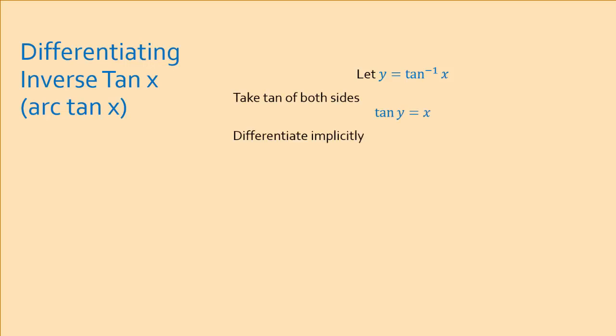From here we can differentiate implicitly. The derivative of tan is sec², so when we differentiate tan y we get sec²y times dy/dx, and the derivative of x is just 1. We can then rearrange this to get dy/dx = 1/sec²y.